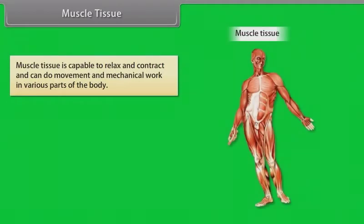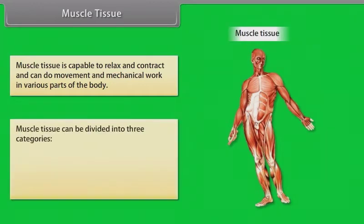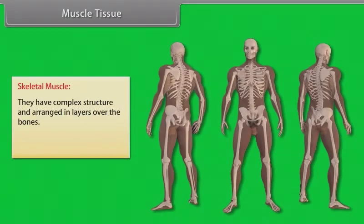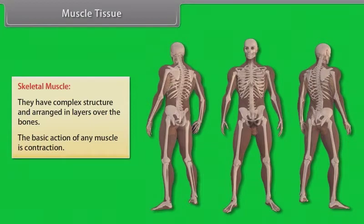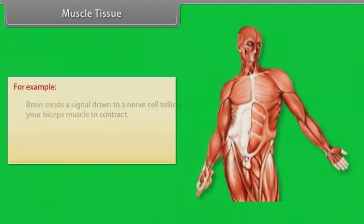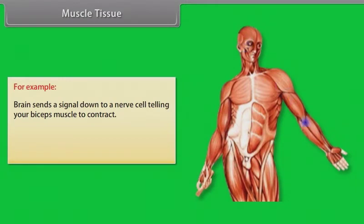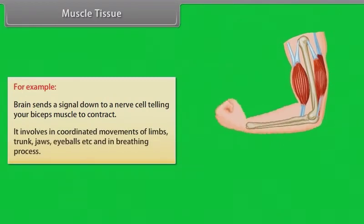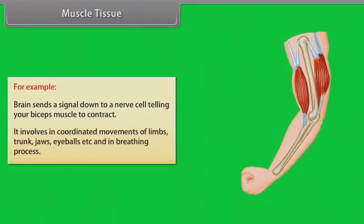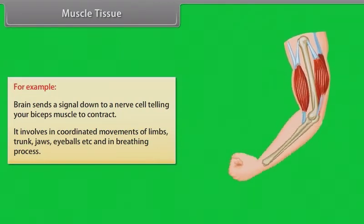Muscle tissue is capable of relaxing and contracting and can do movement and mechanical work in various parts of the body. Muscle tissue can be divided into three categories: skeletal, smooth, and cardiac. Skeletal muscles have a complex structure and are arranged in layers over the bones. The basic action of any muscle is contraction — for example, the brain sends a signal down a nerve cell telling the biceps muscle to contract. Skeletal muscle involves coordinated movements of limbs, trunk, jaws, eyeballs, and is also involved in the breathing process.